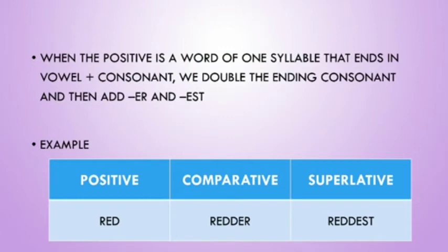To form the superlative, we double the letter -d and add -est. So it becomes 'red,' 'redder,' 'reddest'.